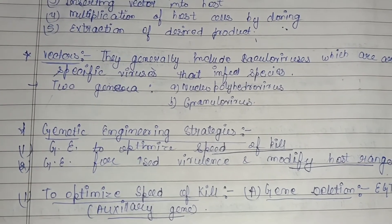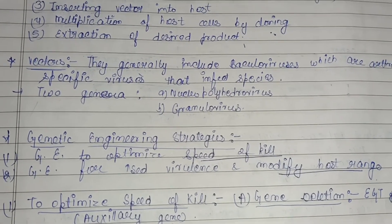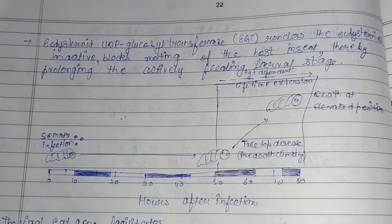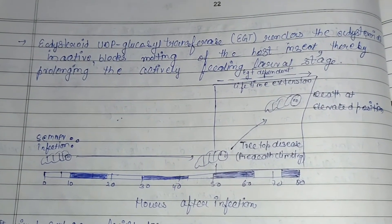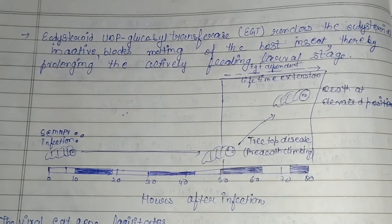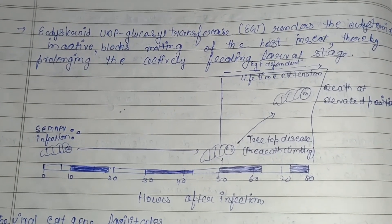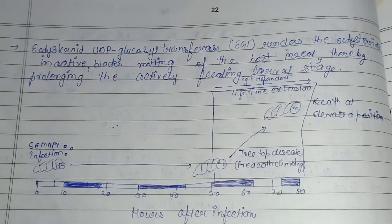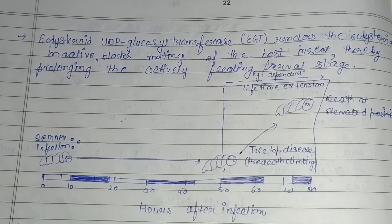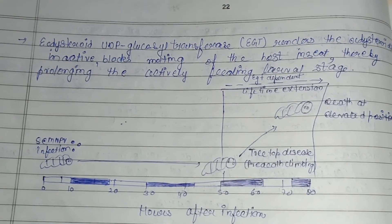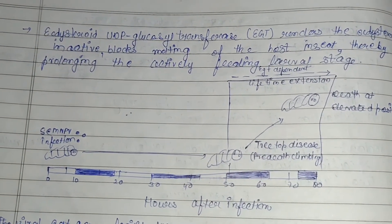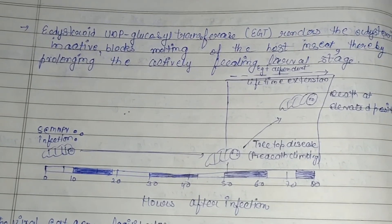To optimize the speed of kill, the first step is gene deletion using the egt gene. EGT refers to ecdysteroid UDP-glucosyl transferase, which renders ecdysteroids inactive, blocking the secretion of the ecdysteroid hormone present in insects and inhibiting the molting of the host insect. This egt gene thereby prolongs the actively feeding larval stage, which is the main cause of disease in the plant, and this stage is inhibited by the gene deletion step.